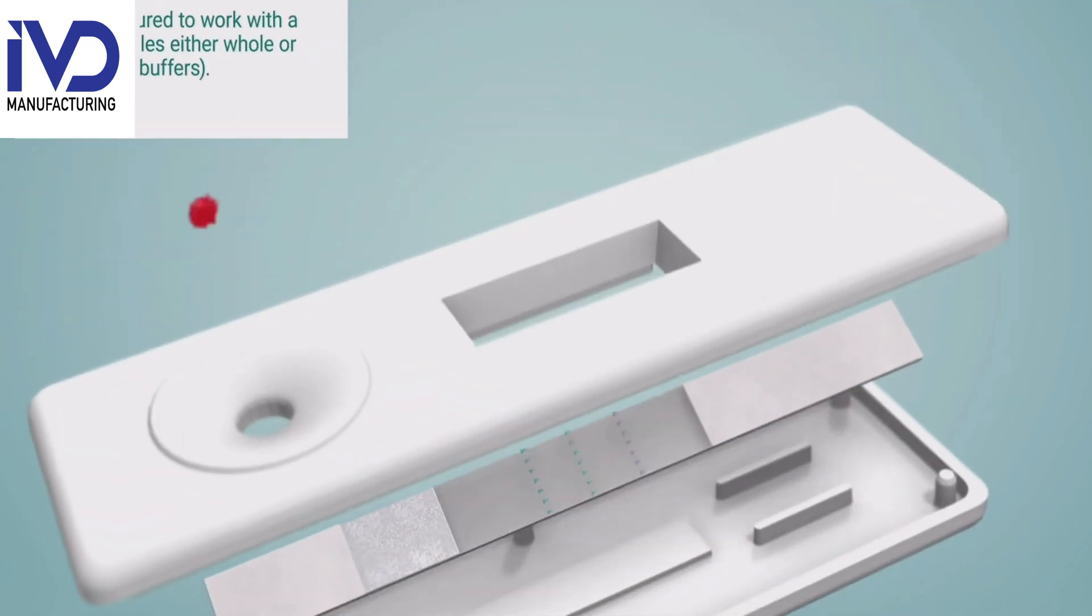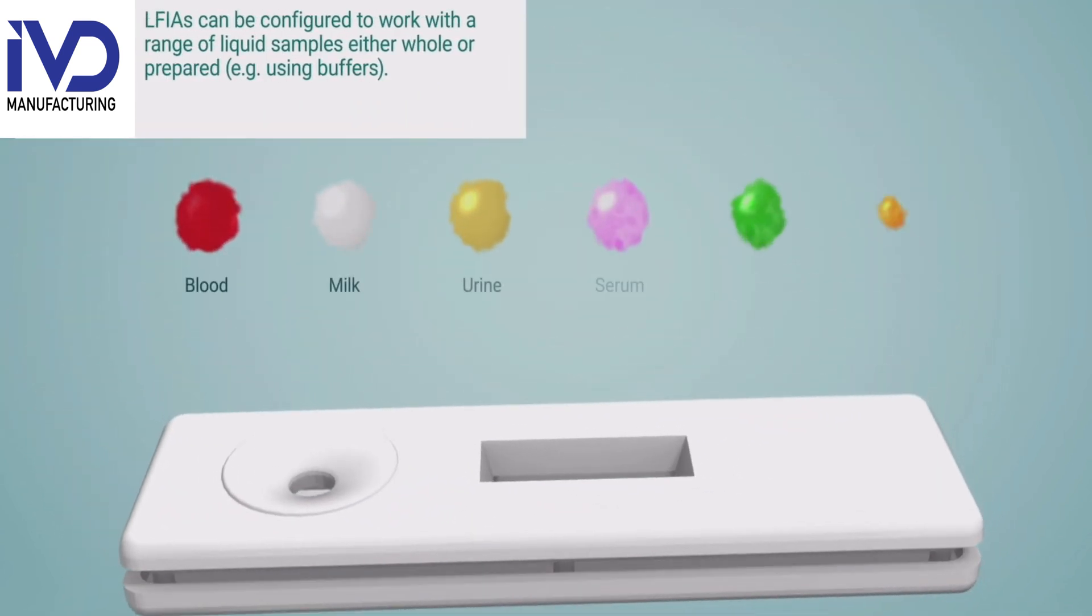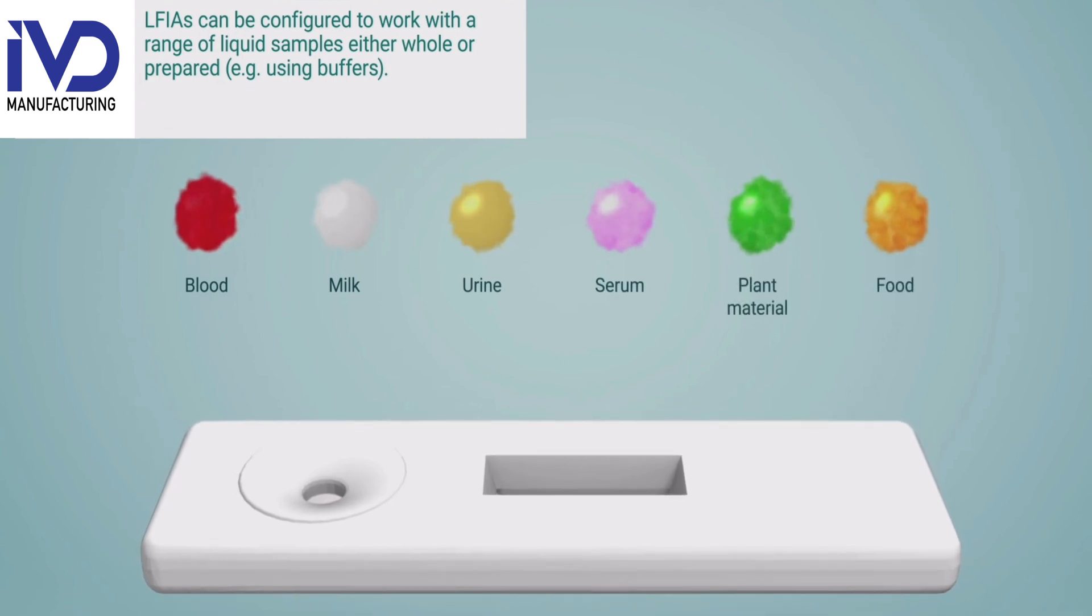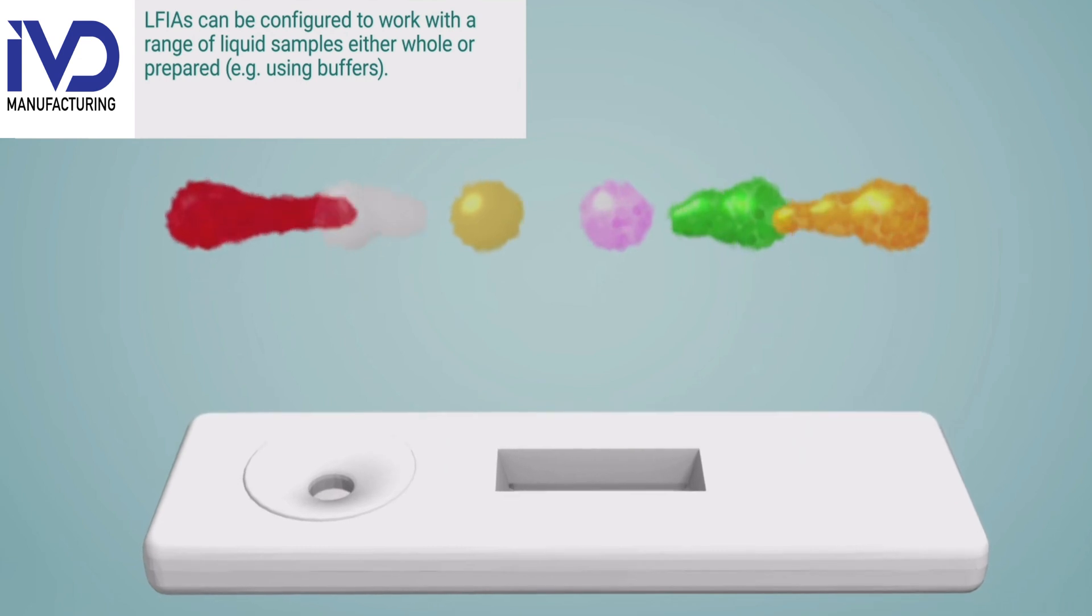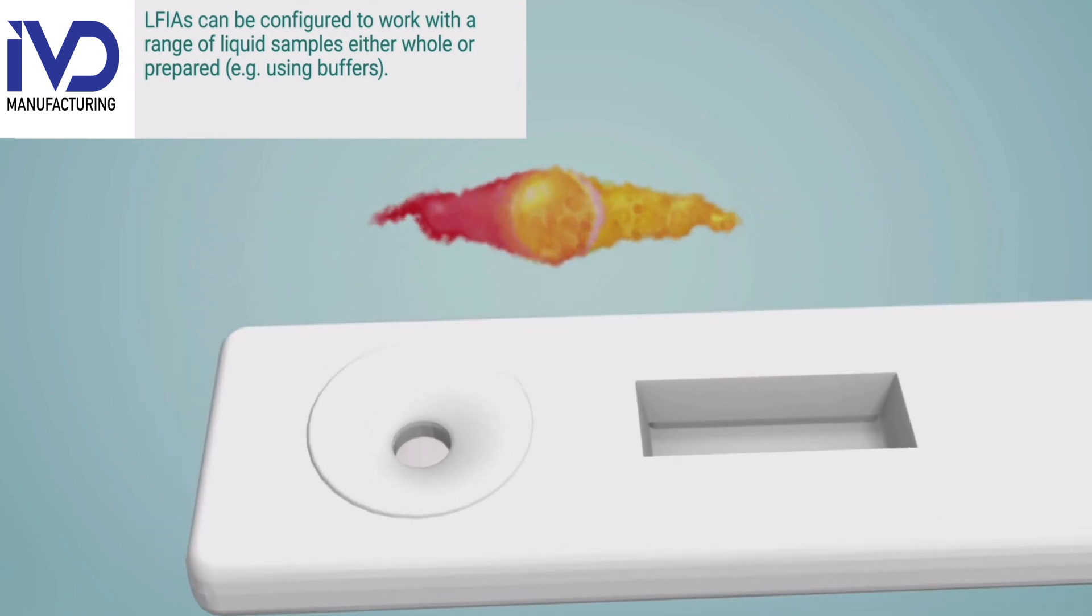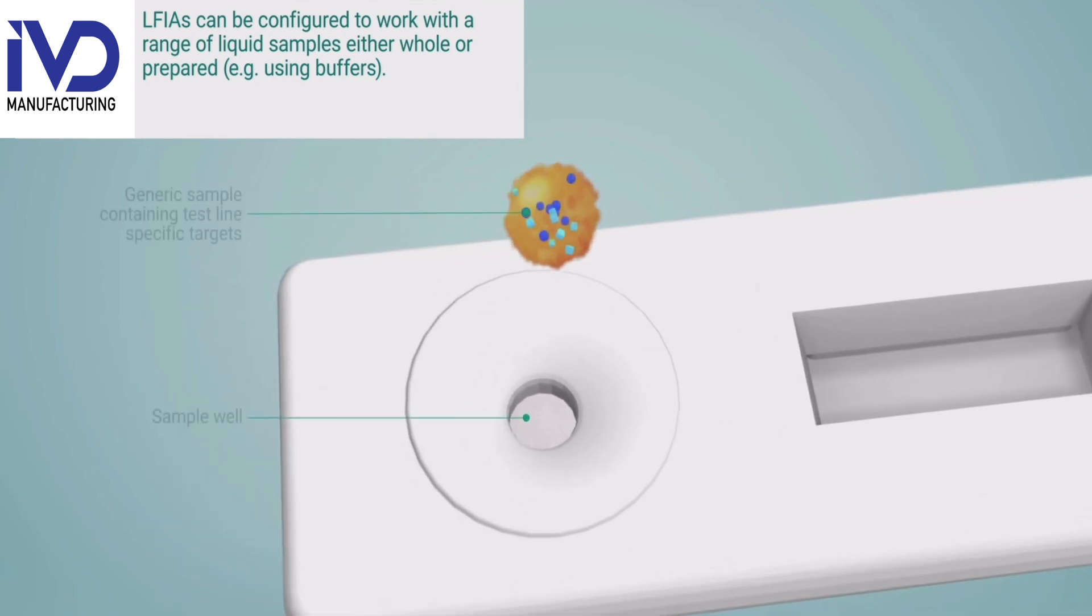The test strips are fitted within the cassette. There could be a variety of samples which can run upon this test device. For the time being, let's assume that I am going to put my serum sample within the sample cavity of the cassette.